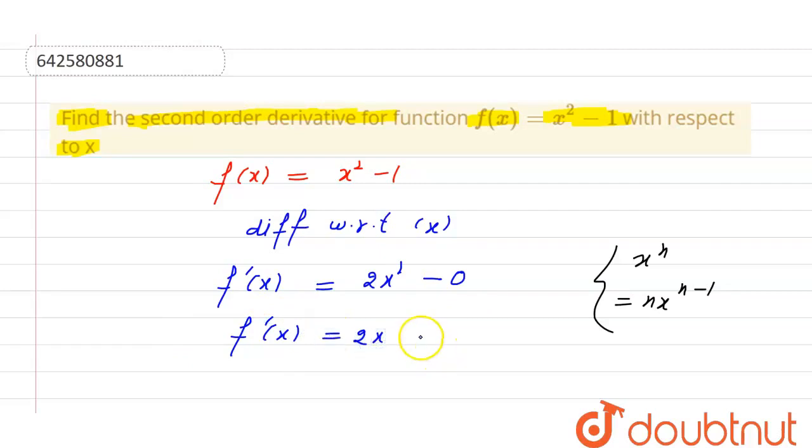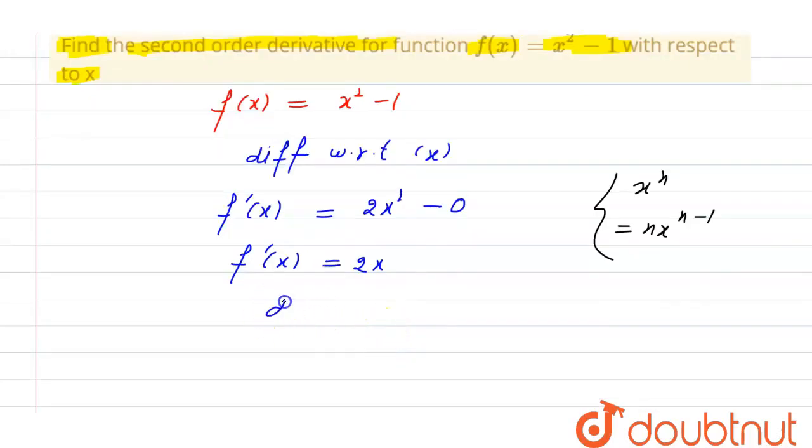Now, differentiation again with respect to x. We will get f double dash x, f double dash x is equal to 2. 2 is the constant. Differentiation of x with respect to x will be 1 which is equal to 2.